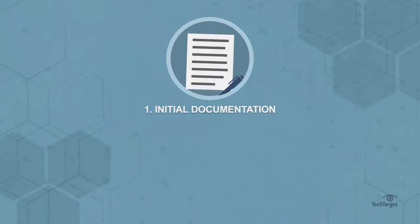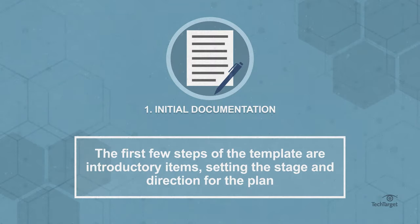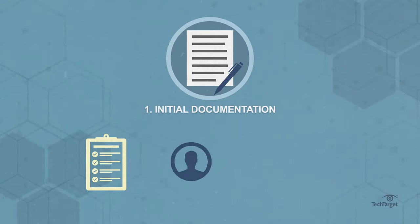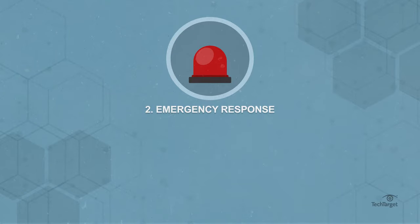Let's examine the table of contents from the template. One: initial documentation. The first few steps of the template are introductory items, setting the stage and direction for the plan with such elements as policy, personnel delegation and data backup planning. These are important steps, and having solid documentation in your DR plan helps ensure compliance and the ability to implement the plan.